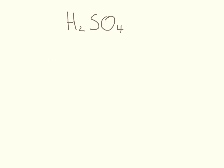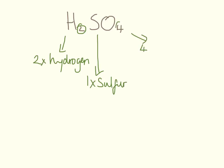This is sulfuric acid, H2SO4. It has two hydrogens because of this little number here. It has one sulfur because it doesn't have a number after it. And it has four oxygens because of this number here. So it has three different elements and seven atoms in it.